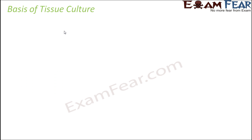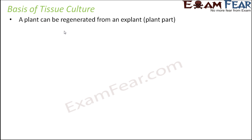What is the basis of tissue culture? The concept is that a plant can be regenerated from an explant. An explant is nothing but a small part of the plant — it can be a plant cell, a plant tissue, or a plant organ — which is taken out and then grown in a test tube. That test tube should be sterile, completely germ free, and it should contain all the necessary nutrients.